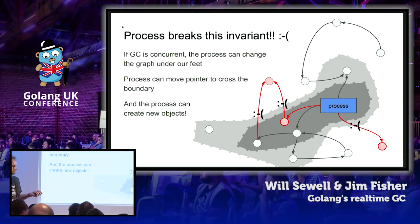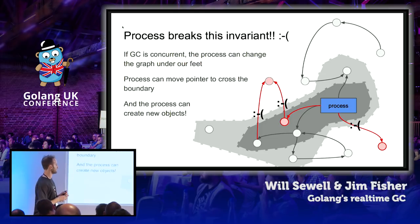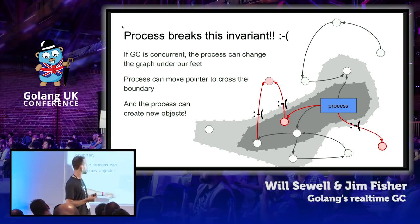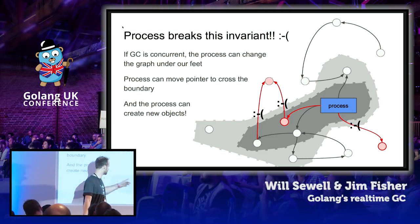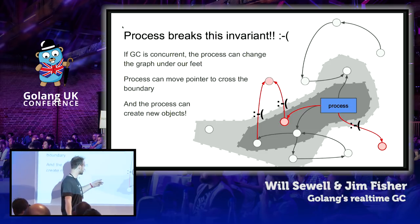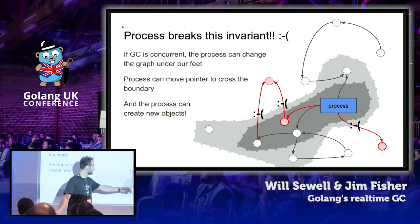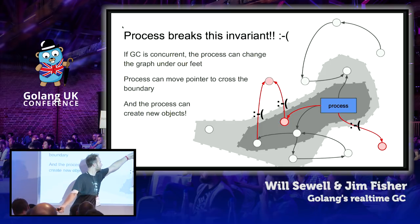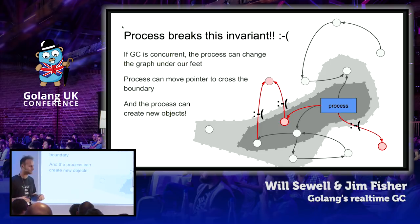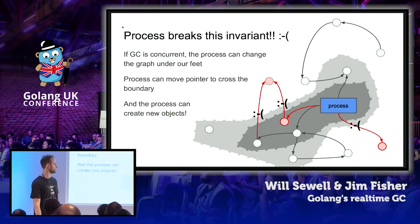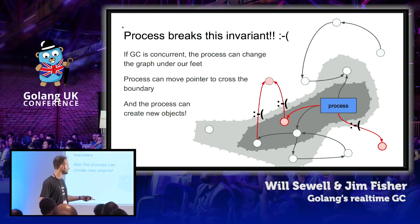If you were to just do this naively — running mark and sweep concurrently with your program — your process can break that invariant. Here are some examples: your program can create objects and can move pointers around. For example, if it were to create an object with a pointer to an object in the white set, it has broken the invariant because you have a pointer crossing the grey boundary from the black set to the white set.